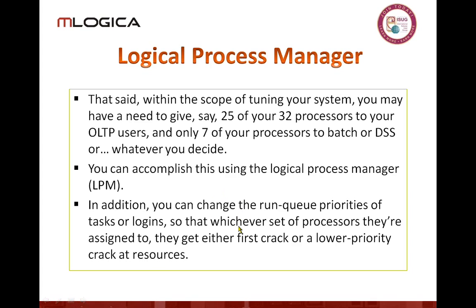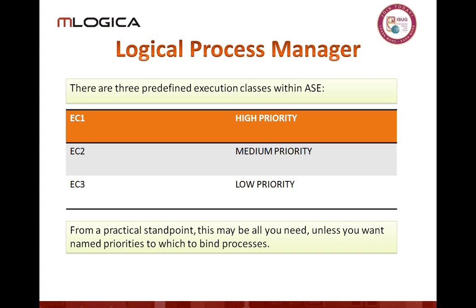Within the scope of the Logical Process Manager, we have the ability to set priorities of tasks and logins, assign them to specific engines or engine groups, and give them priorities within each group. In the LPM, there is also the concept of execution classes. By default there are three execution classes: EC1, EC2, and EC3, with priorities of high, medium, and low. You can change your own priority at the session level. The default priority for almost everything is medium. With things like updates and modifying index structures, you may escalate to a higher priority internally. Sysmon output will show you how many times priority escalations happen per minute.